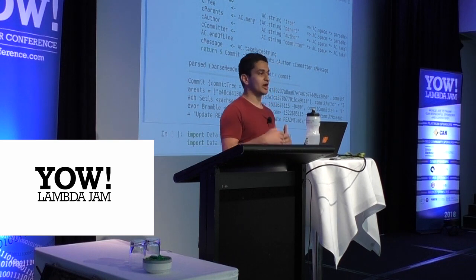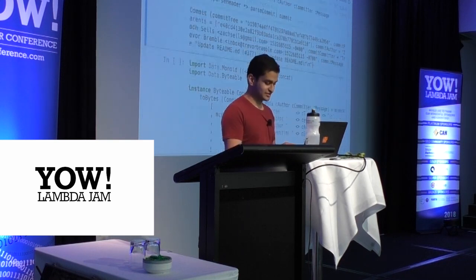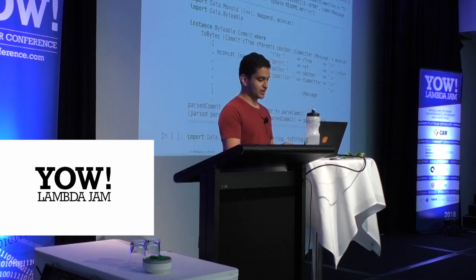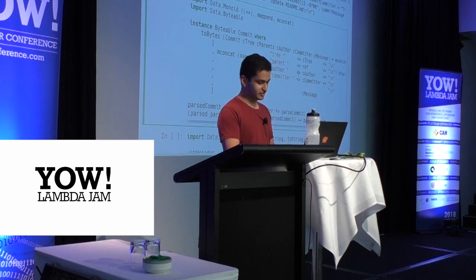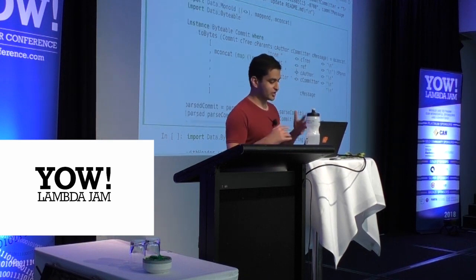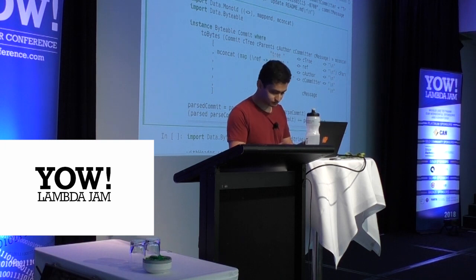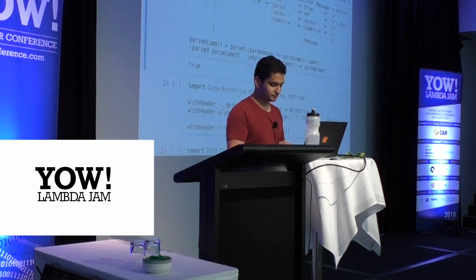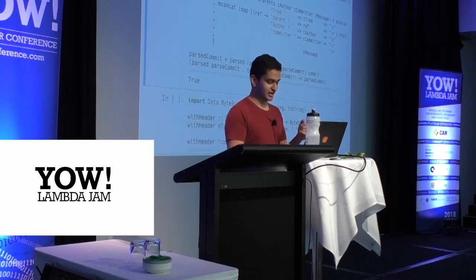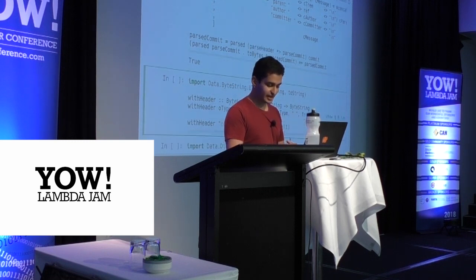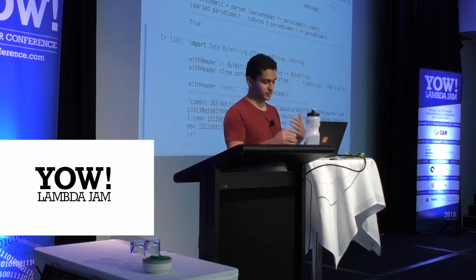I've parsed the commit, but I also want to serialize it. To do that I essentially just add back in what I took out before — just concatenate a bunch of things together. Then I do a quick round trip: parse something, serialize it, and check that they're both equal. I also write a with-header function that takes the length of my content and the object type and produces the full header.